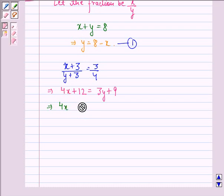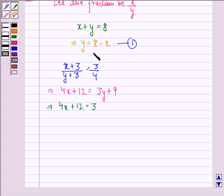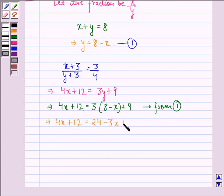Or we can write it as 4x plus 12 is equal to 3 into, now we know that the value of y is 8 minus x. So 3 into 8 minus x plus 9. This we get from equation 1.